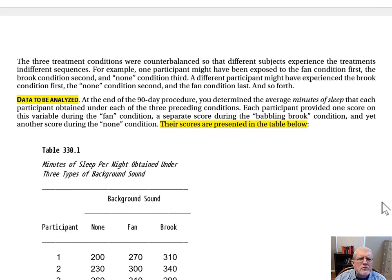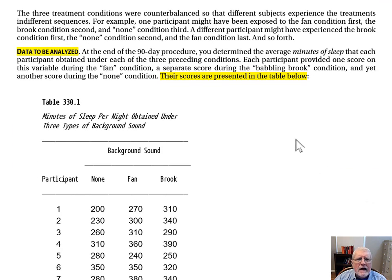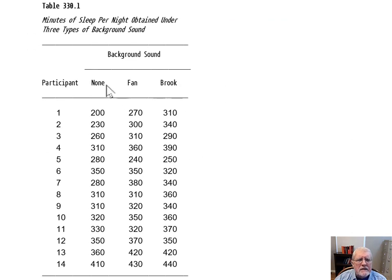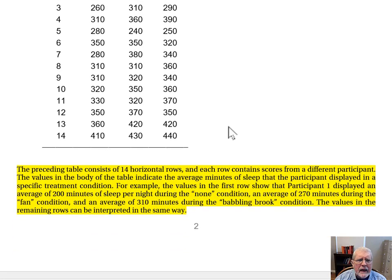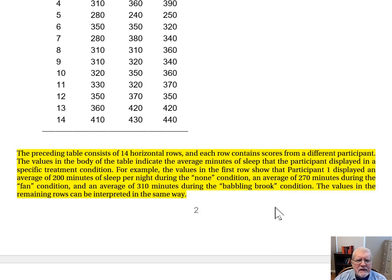Let's scroll down to the top of page 2: Data to be Analyzed. Scores produced by the participants in this investigation are reproduced in Table 330.1, which shows minutes of sleep per night obtained under the three types of background sound. Here we have the minutes of sleep obtained under the none condition, minutes of sleep obtained under the fan condition, and so forth. Values in the body of the table indicate average minutes of sleep that each participant displayed in the specific treatment condition.